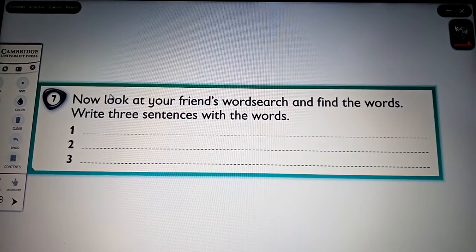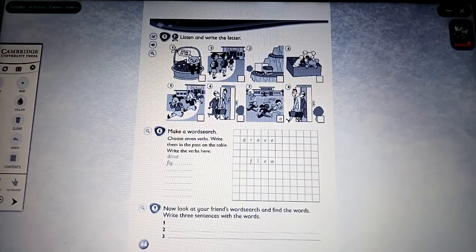Number 7. Now look at your friends' word search and find the words. Write three sentences with the words. Write your sentences only. For example. My sentences are: I read a book yesterday. For example. I watched a film yesterday. Blah blah. Okay.